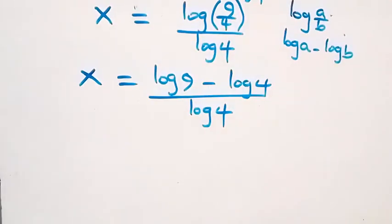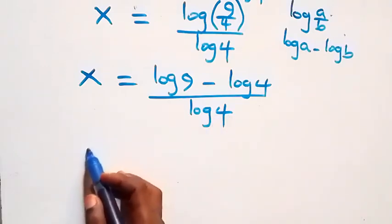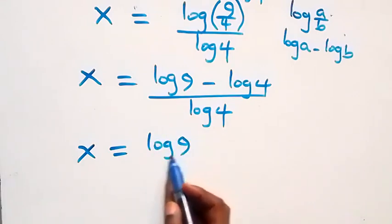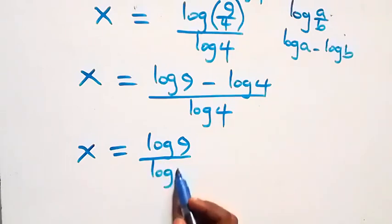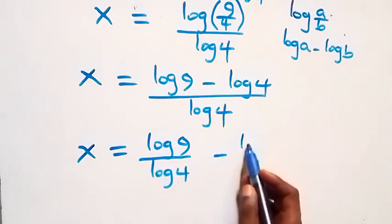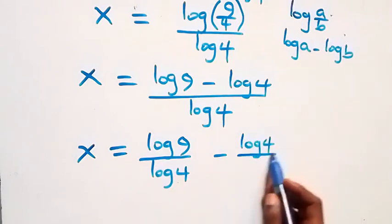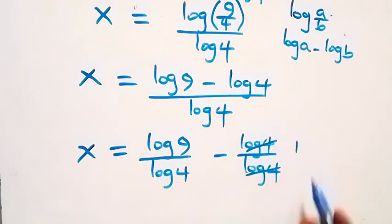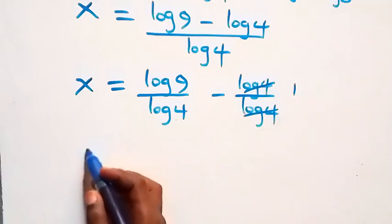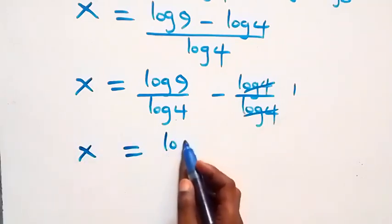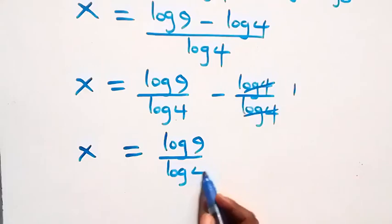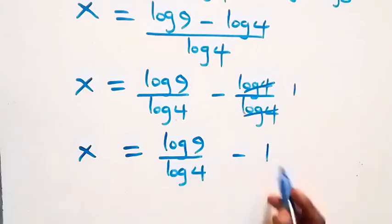We separate this into two fractions: x equals log 9 over log 4 minus log 4 over log 4. The log 4s in the second fraction cancel each other, leaving 1. So we have x equals log 9 over log 4 minus 1.